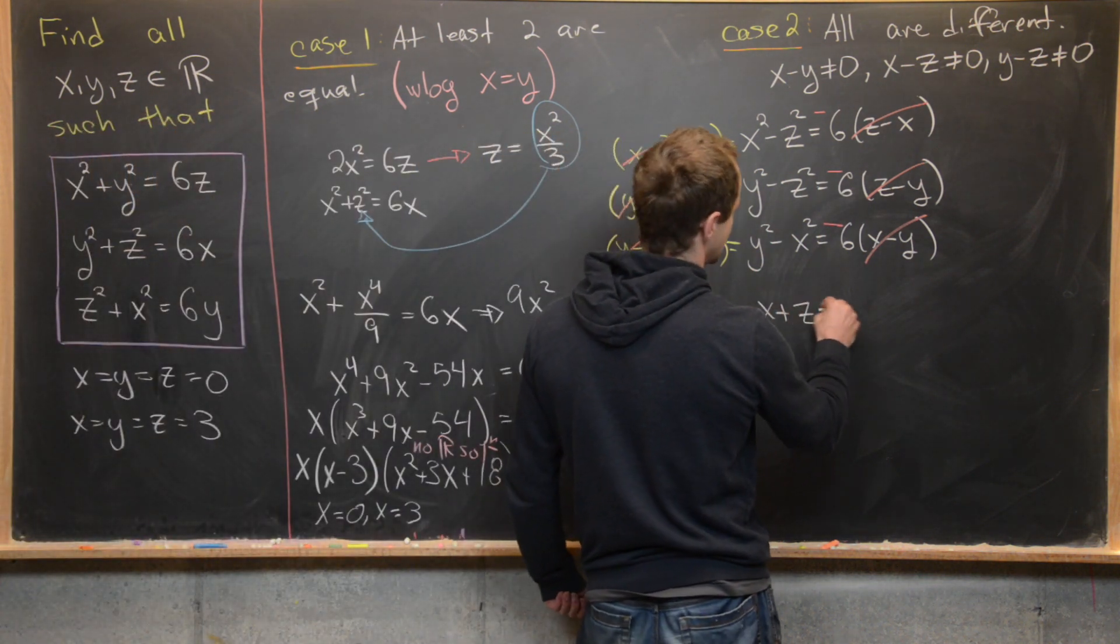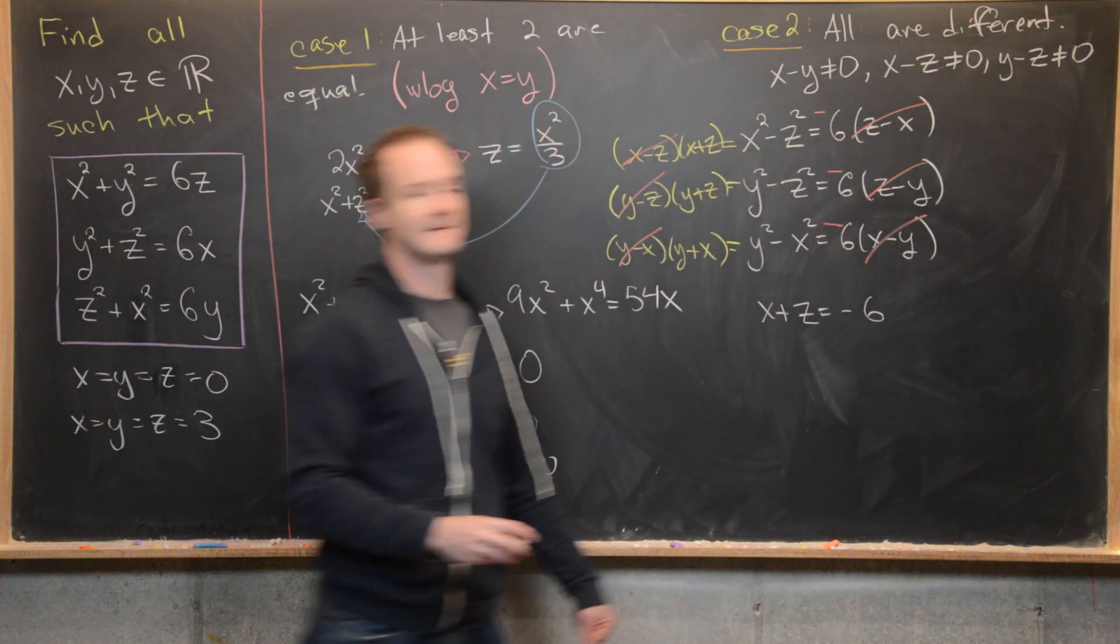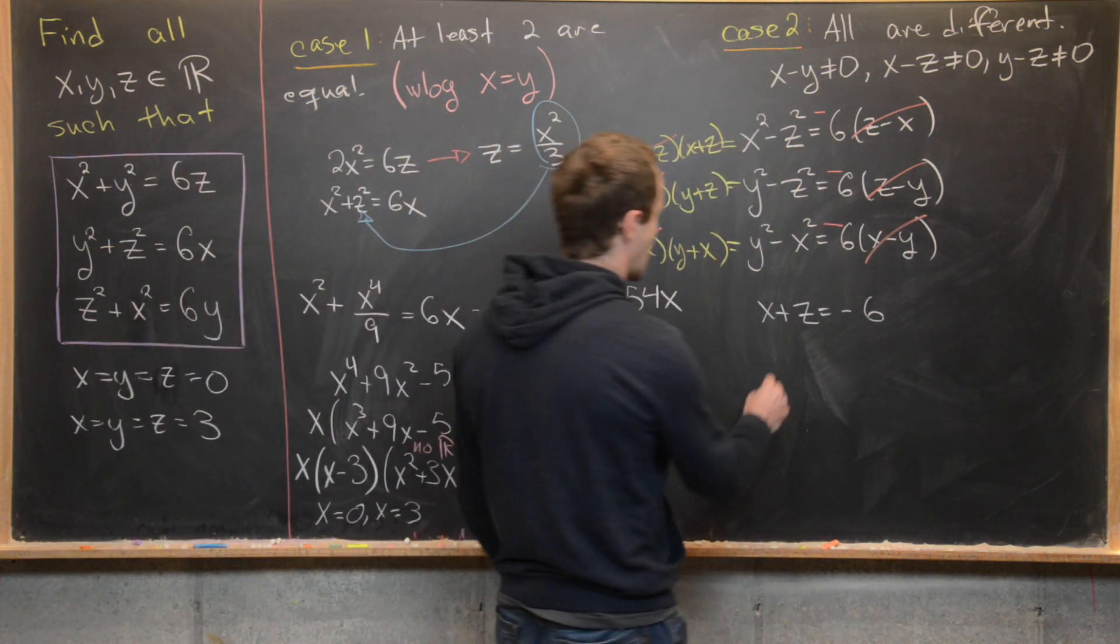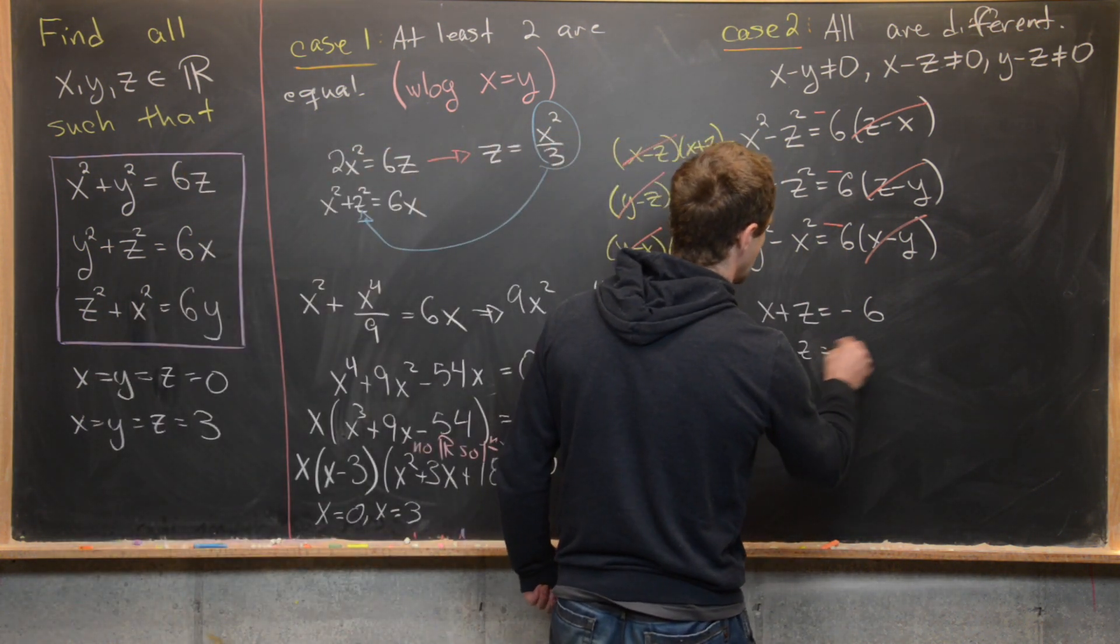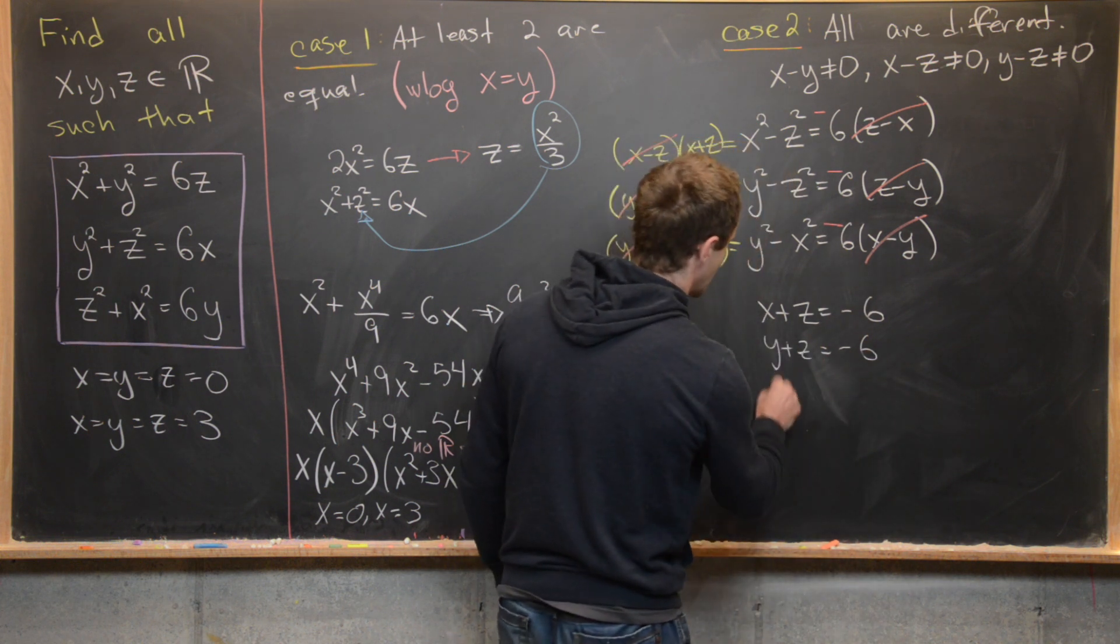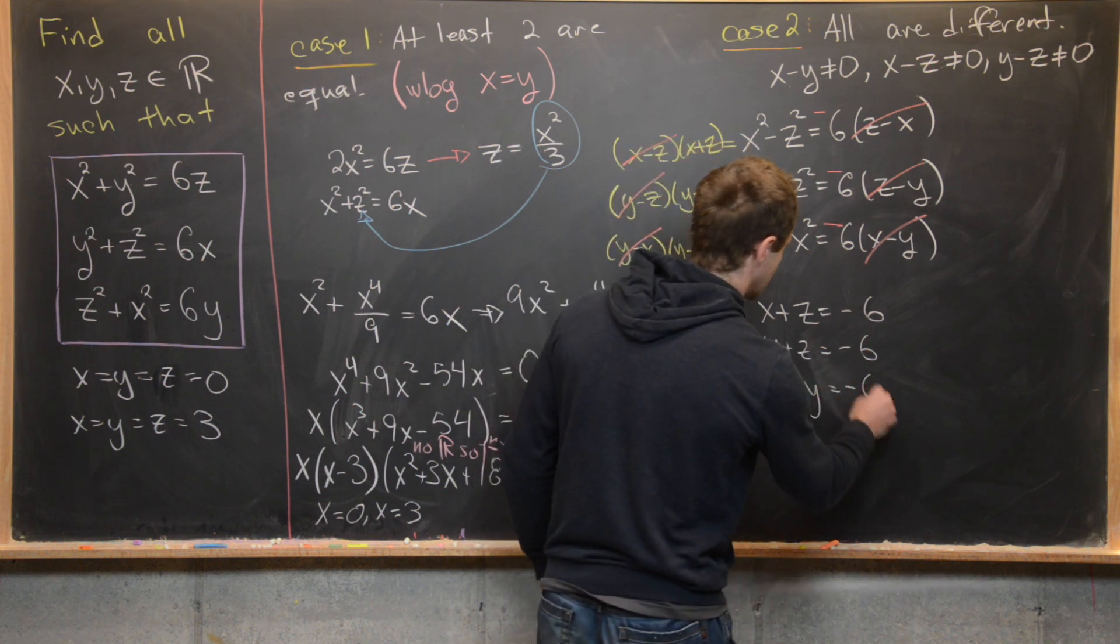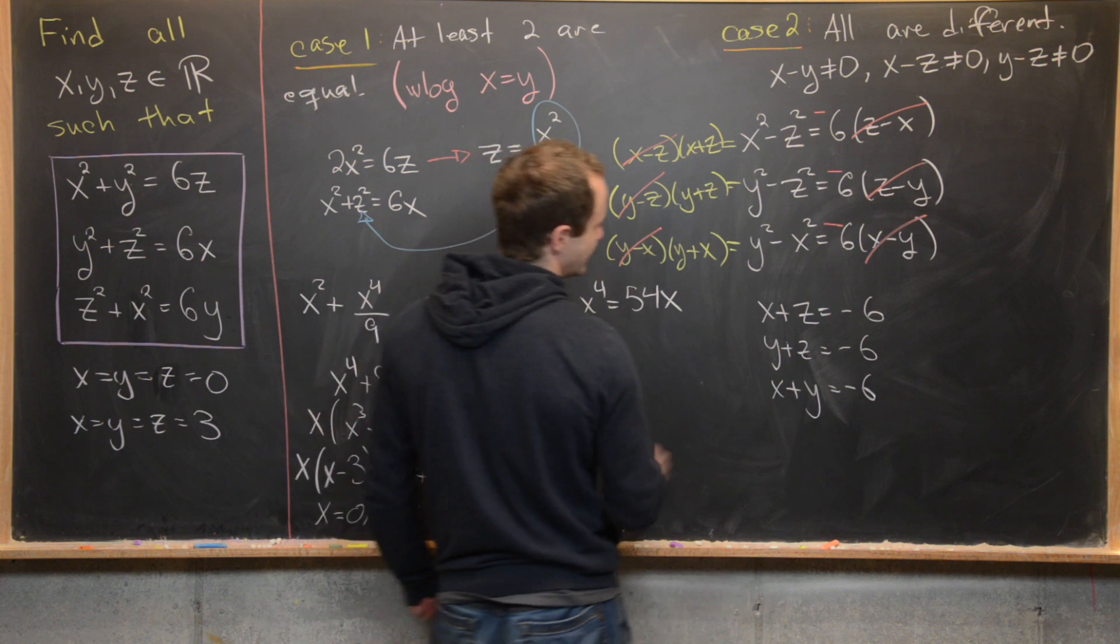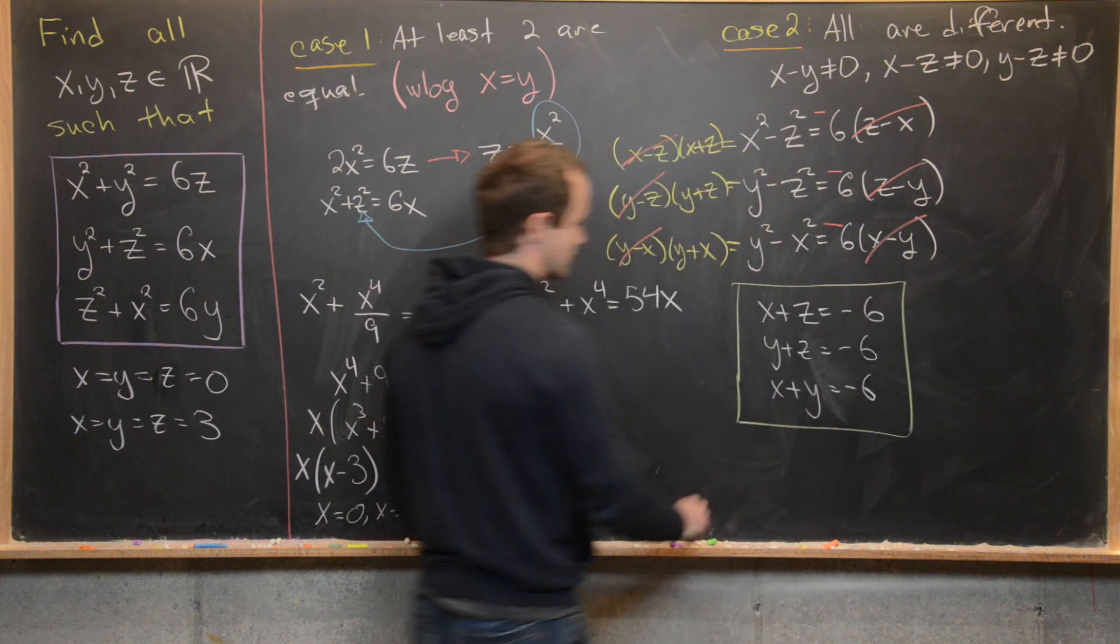So let's see what we've got. We have x + z = -6. We've got y + z = -6. And then we also have x + y = -6. So we've got this new linear system of equations.